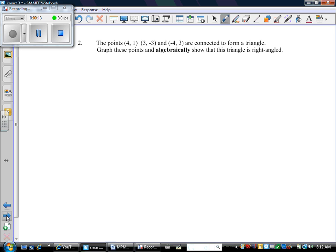It says the points (4,1), (3,-3), and (-4,3) are connected to form a triangle. Graph these points and algebraically show that this triangle is right-angled. Well, we'll talk about the algebra second. Let's start by doing the easy stuff. Let's graph these points.